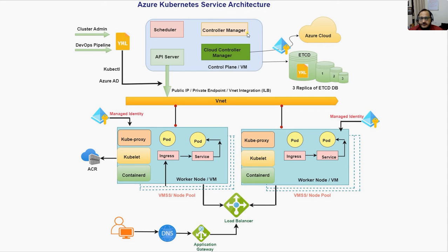The controller manager is always responsible for desired state configuration. For example, if in your YAML configuration file you have defined that you want three replicas of your application, the controller manager ensures that always three instances of your application are running. The cloud controller manager is responsible for creating resources on Azure cloud — for example, creating a storage account — because it accesses the Azure cloud API.